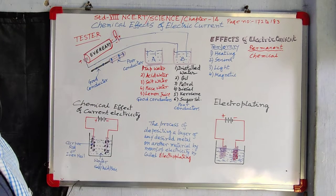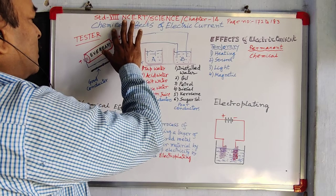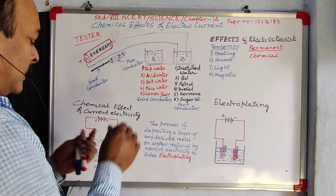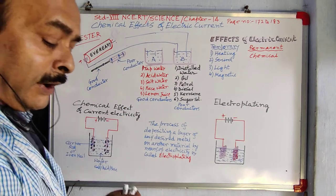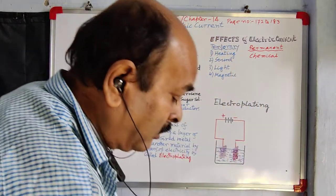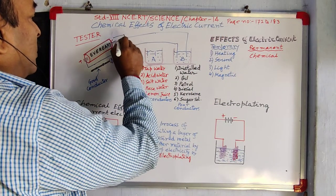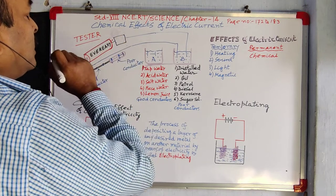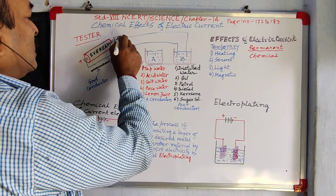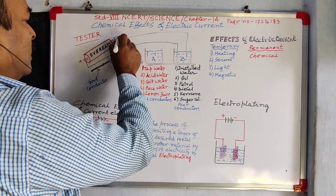But there can be another kind of tester. Suppose bulb or LED is not available — we can put one magnetic compass instead. Take a matchbox and inside put a needle compass. A magnetic compass — you might have seen it — it always orients in the north-south direction.